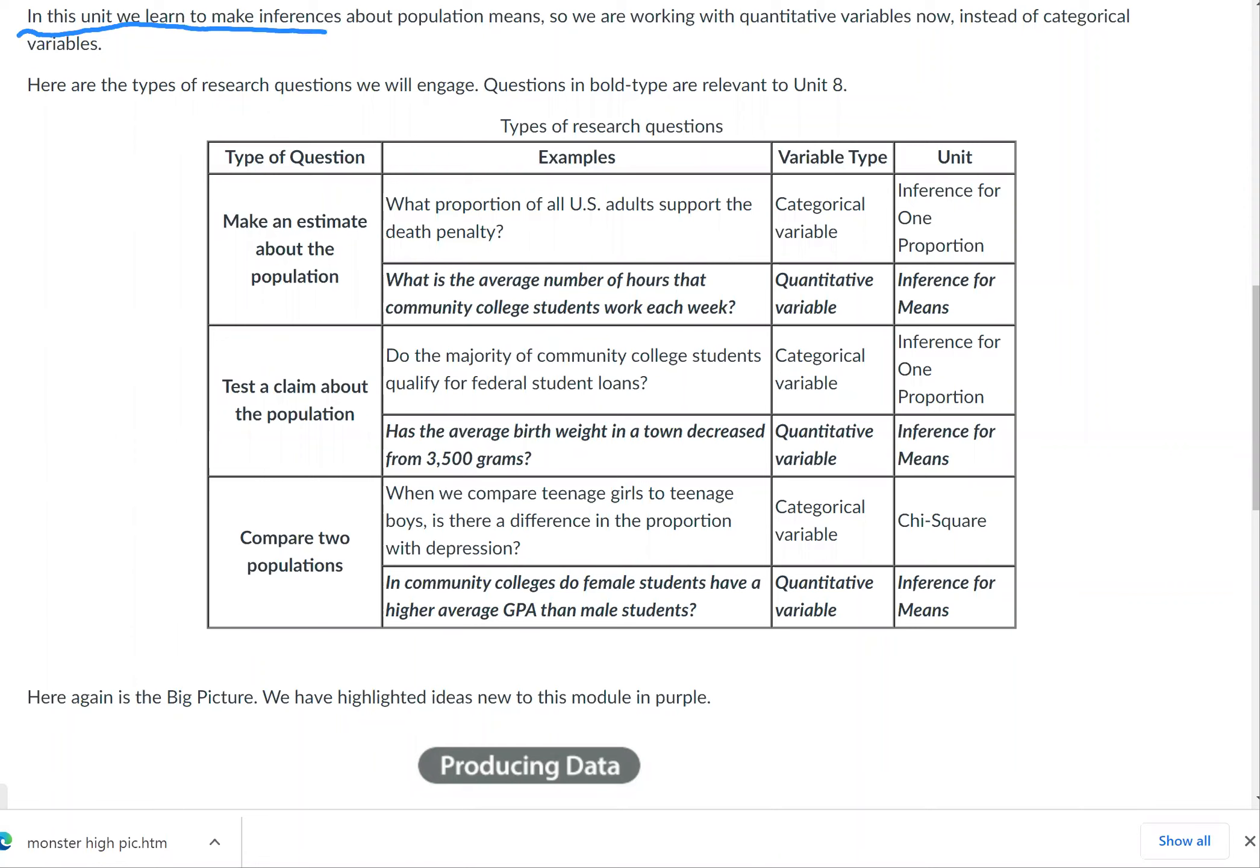That was the end of the last unit. Now we start a new unit starting with Module 20, in which we learn to make inferences about population means. So now we're working with quantitative variables instead of categorical variables like we did in the previous unit.